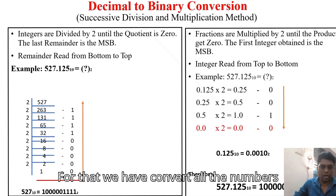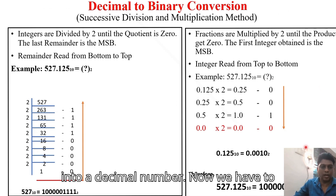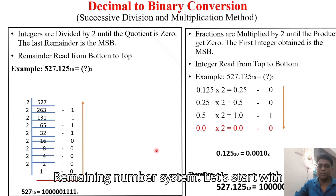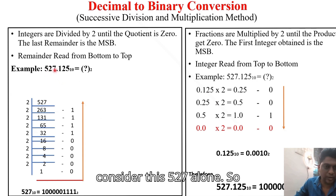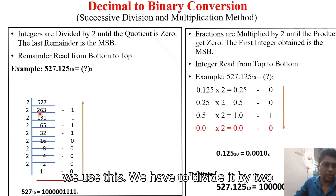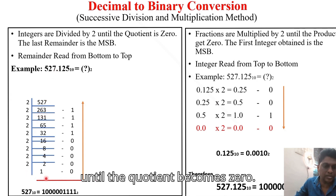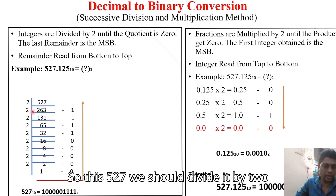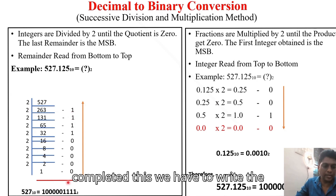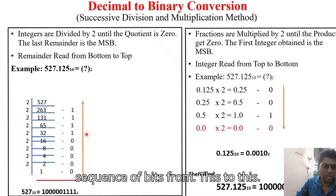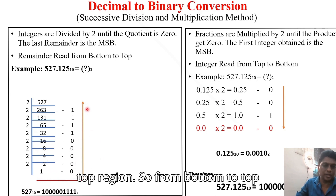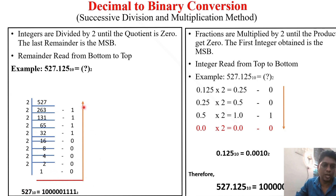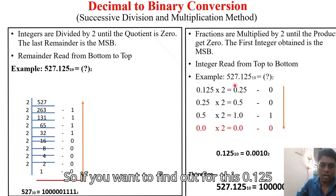Now let's convert decimal to binary. The given number is 527.125 base 10. First, consider the integer part 527. We divide by 2 repeatedly until the quotient becomes 0, noting the remainders each time. Once complete, we write the sequence of remainders from bottom to top to get the binary integer part.